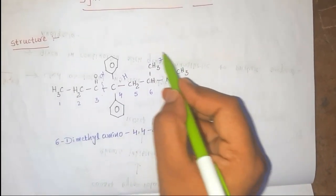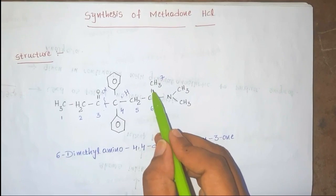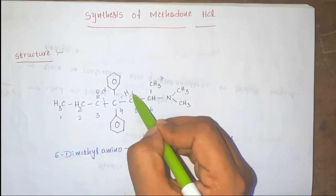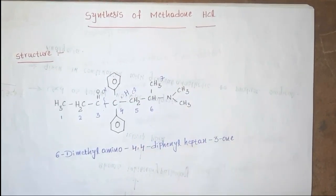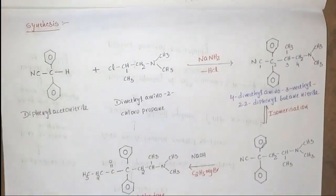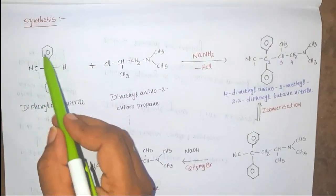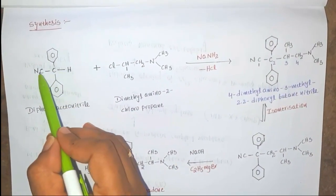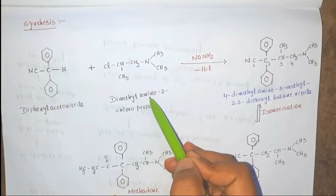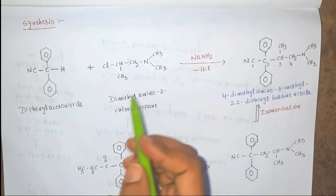The second starting material: I want to take the methyl group at the first position; this carbon is directly attached to chlorine. So the second starting material is dimethylaminochloropropane. To summarize: the first starting material is diphenyl acetonitrile, and the second starting material is dimethylamino-2-chloropropane.